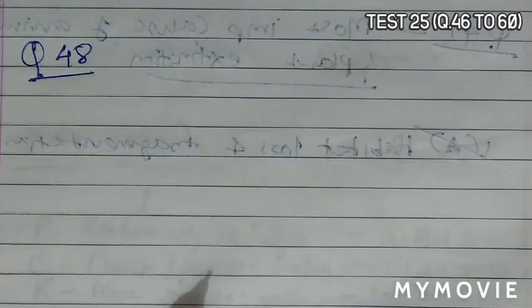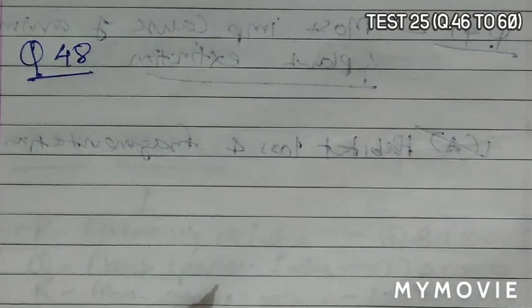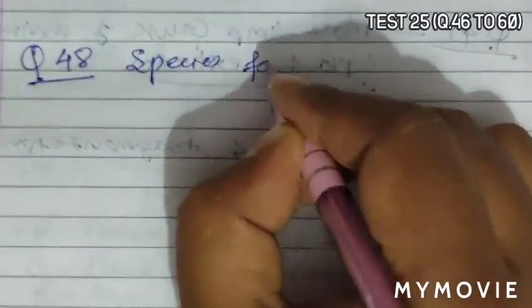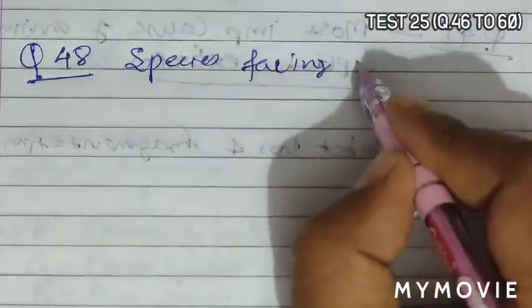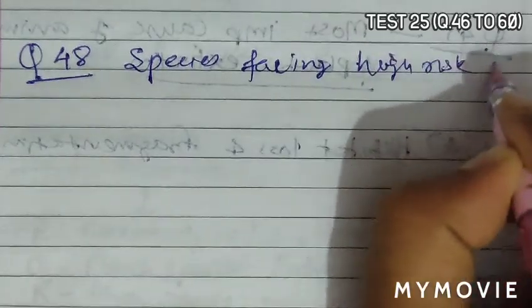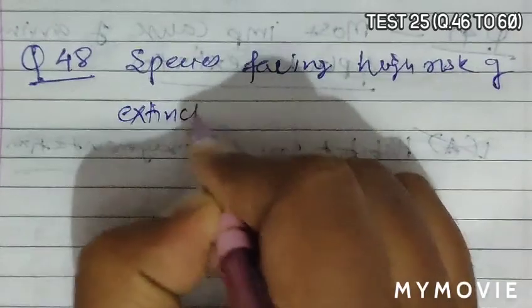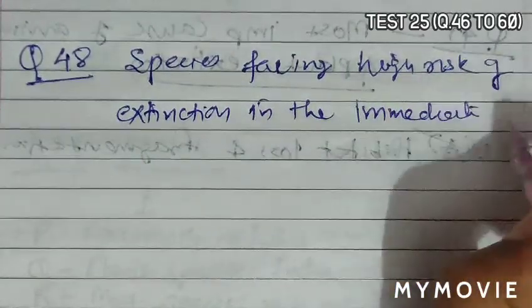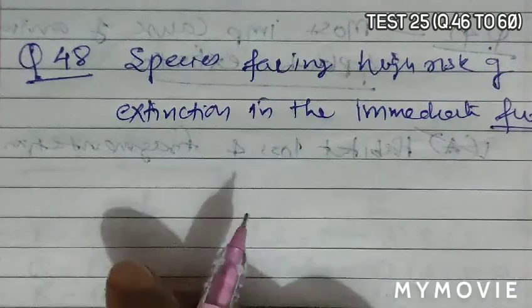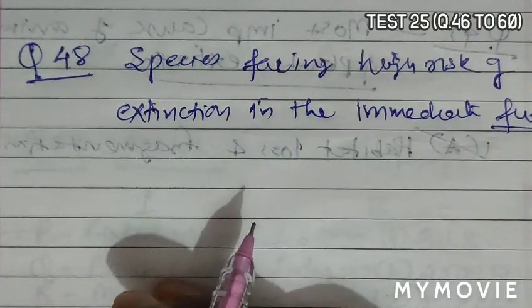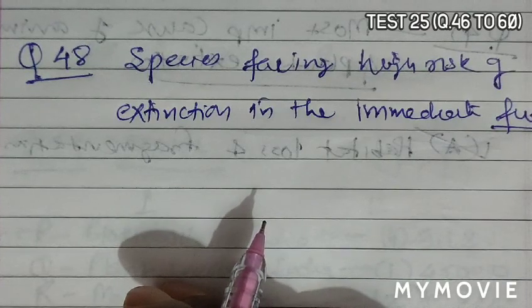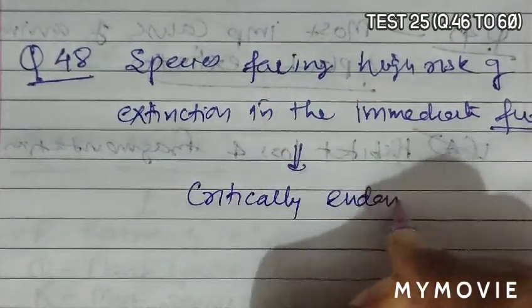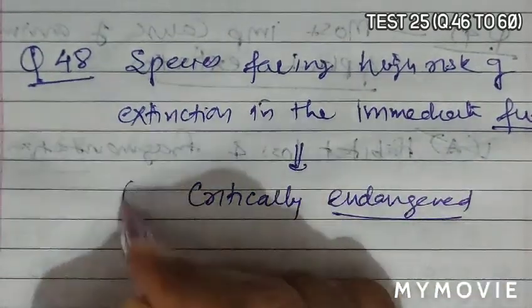Question 48 asks that a species facing extremely high risk of extinction in the immediate future is called what. The taxon under critically endangered category are facing a high risk of extinction in the world and can become extinct at any moment in the immediate future. They are nothing but critically endangered. So C is the correct answer.